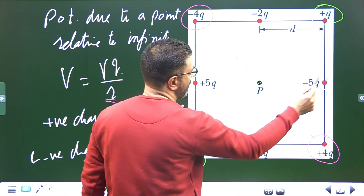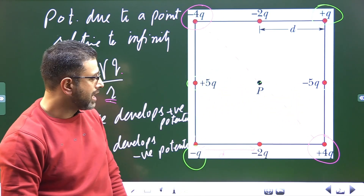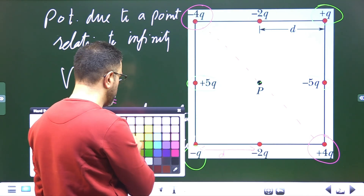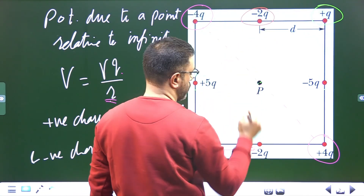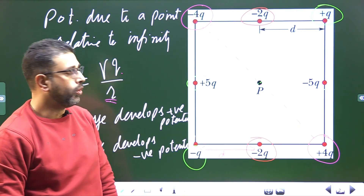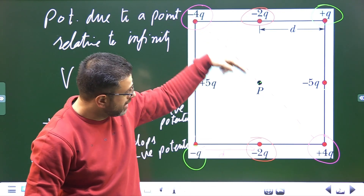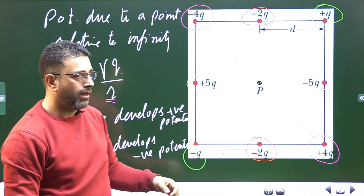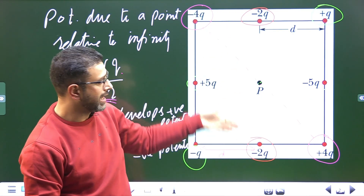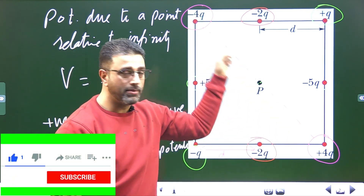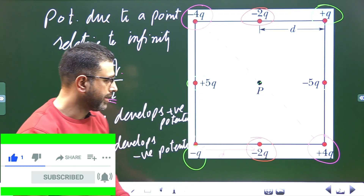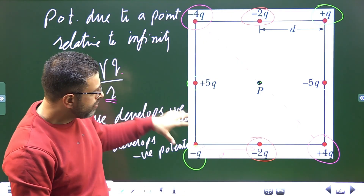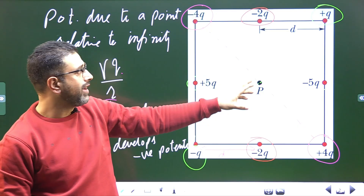Same is the case with plus 5q and minus 5q — the potential due to those two charges is also zero. So we are left with just two charges: minus 2q here and minus 2q here. Both are negative. We have to get out of vector thinking — if we were dealing with electric fields, these two would cancel, but we are talking about potential, which is a scalar. Both will develop negative potential, and the rest of the particles cancel out pairwise.